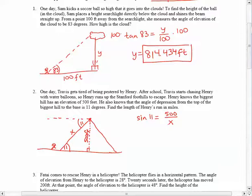And then we can just solve for x. I would probably multiply both sides by x, so I get x times the sine of 11 equals 500. And then isolate the x by dividing by sine 11.